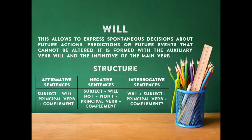Con el will nos permite expresar acciones espontáneas sobre el futuro, predicciones o eventos que no pueden ser alterados — quiere decir que pasarían porque van a pasar. Está formado con el auxiliar will y el verbo principal en presente. Con las estructuras tenemos la oración afirmativa: llevaría un sujeto, el auxiliar will, el verbo principal en presente y un complemento. En la negativa lleva un sujeto, el auxiliar will negativo — será will not o la contracción won't — un verbo principal y un complemento. Y con la pregunta tenemos que colocar primero el auxiliar will, luego el sujeto, luego el verbo principal y por último el complemento, con el signo de interrogación.